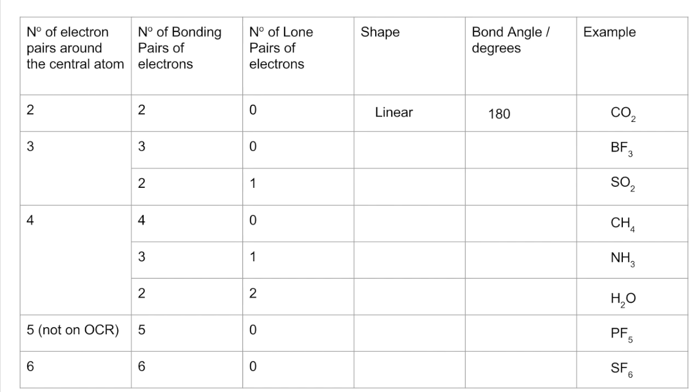Three bonding pairs, no lone pairs. Example would be BF3. So we've got a trigonal planar shape and 120 degree bond angle.